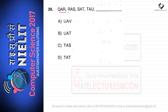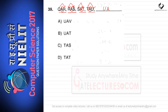Next series: QAR, RAS, SAT, TAU — find the next term. The middle alphabet A is constant. The first letters Q, R, S, T increase by one, so next is U. The last letters R, S, T, U also increase, so next to U is V. The answer is UAV, and option A is correct.